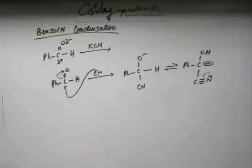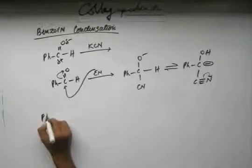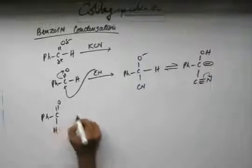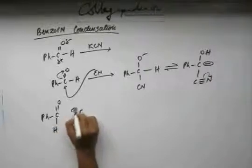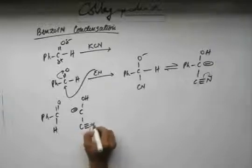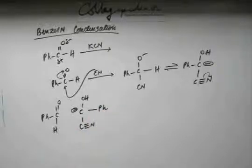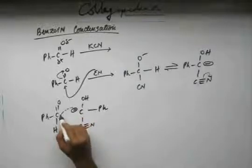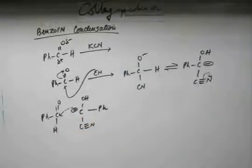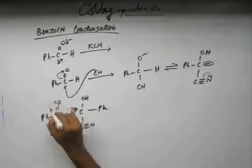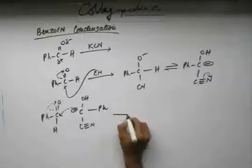So this will go and react with the rest of unreacted benzaldehyde. This is benzaldehyde and this is the anion we have. What can happen is this negative charge will go into the orbital of this carbon, and this carbon will start to form a bond. It will break one of the previous bonds and put its electron into the orbital of oxygen.